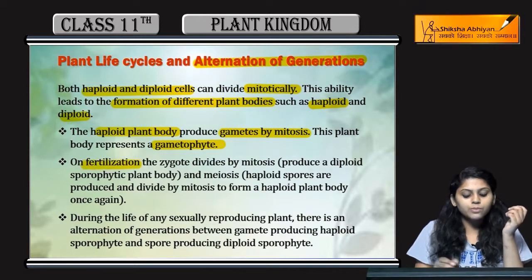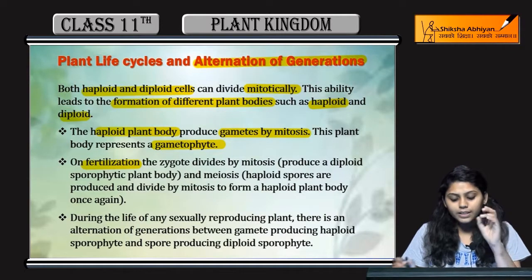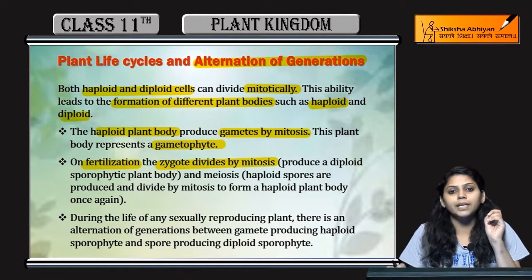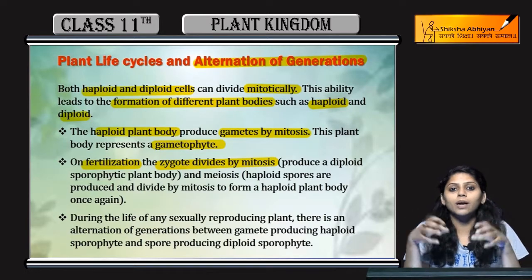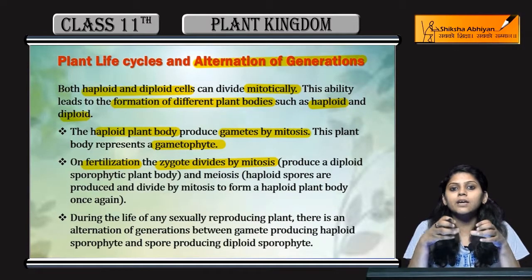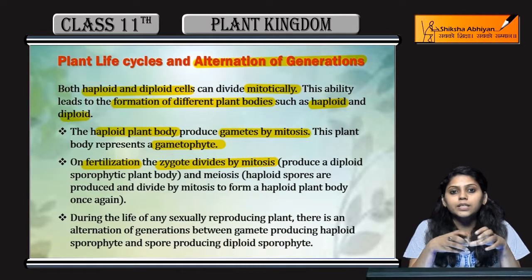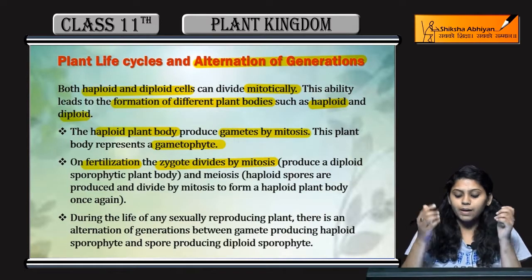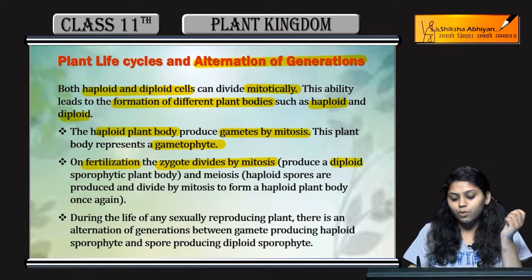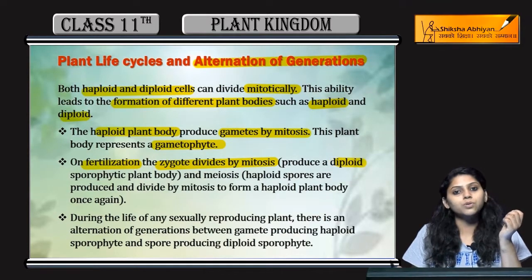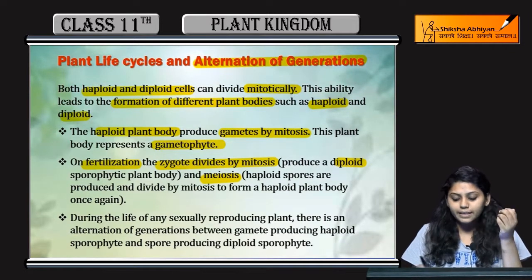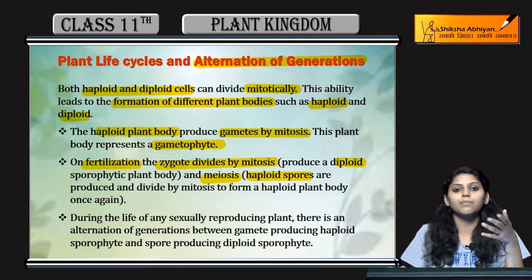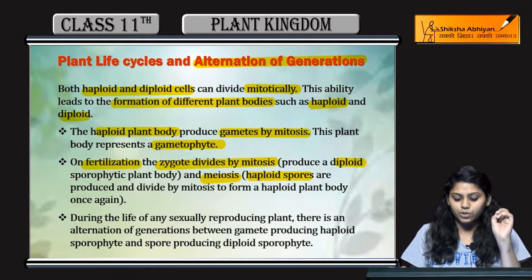Fertilization जब होती है, zygote divide करता है by mitosis। Fertilization हुई, gametes आए, fuse हुए, zygote बनाया। Zygote is diploid। Zygote further mitosis करेंगे, then diploid bodies produce करेंगे। If meiosis होगी zygote में, then haploid spores या फिर haploid gametes produce करेंगे — reductional division होगी।